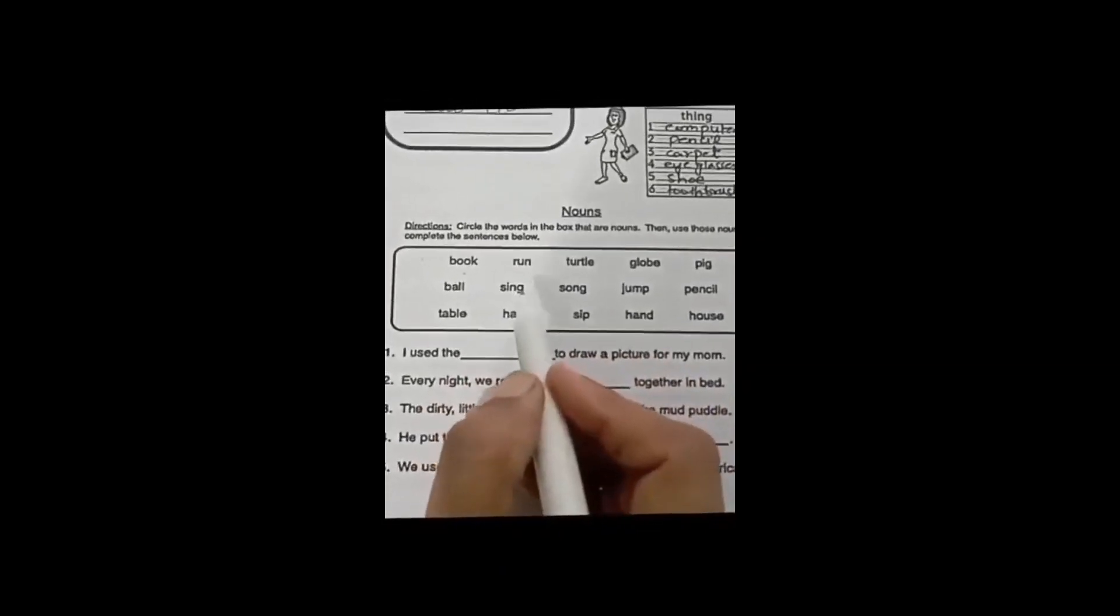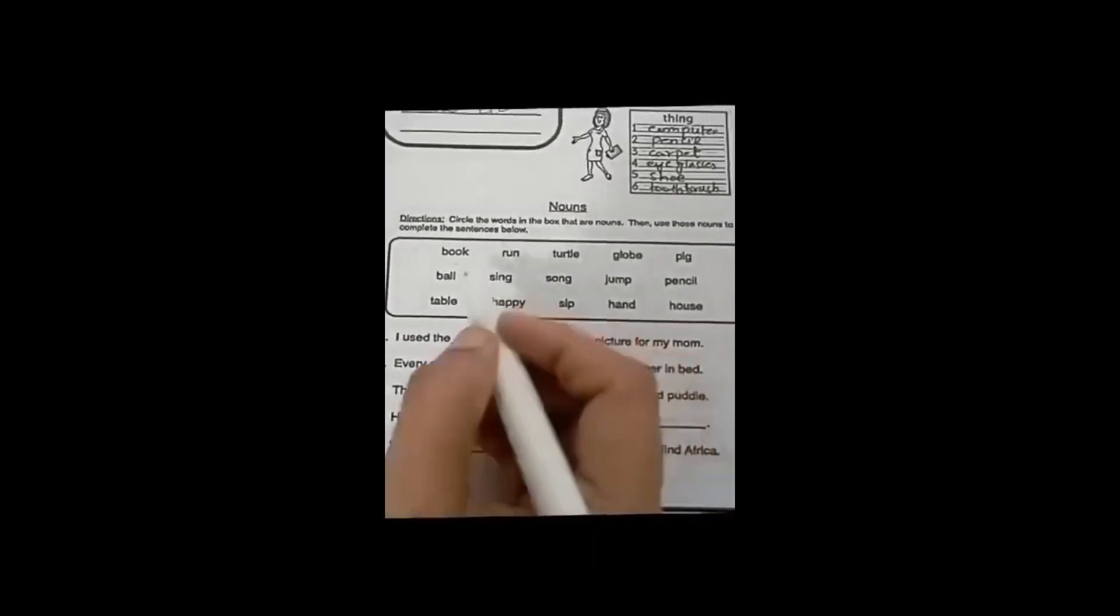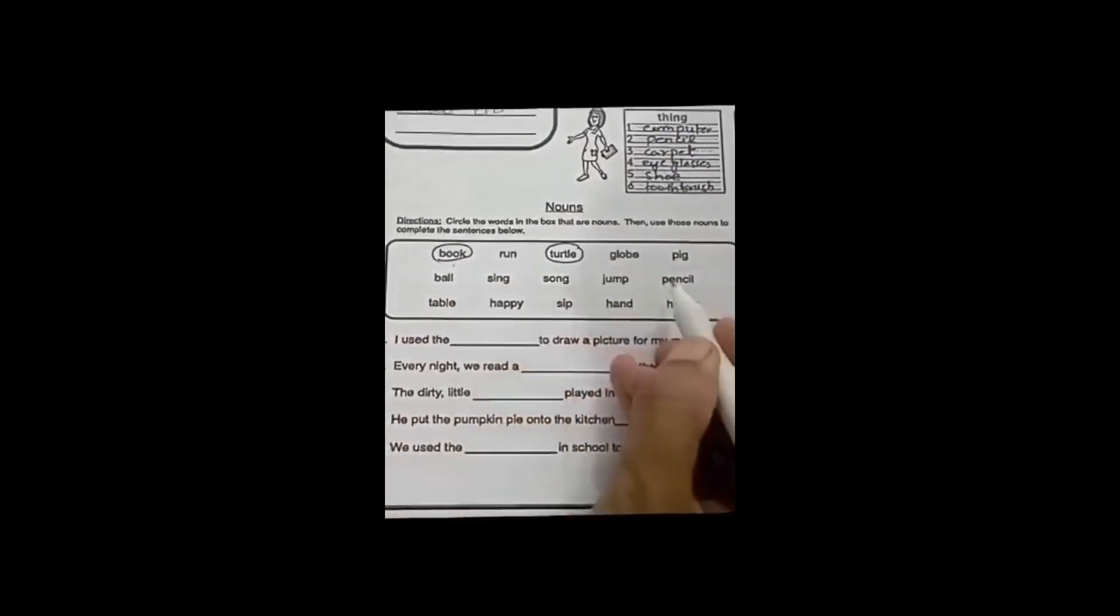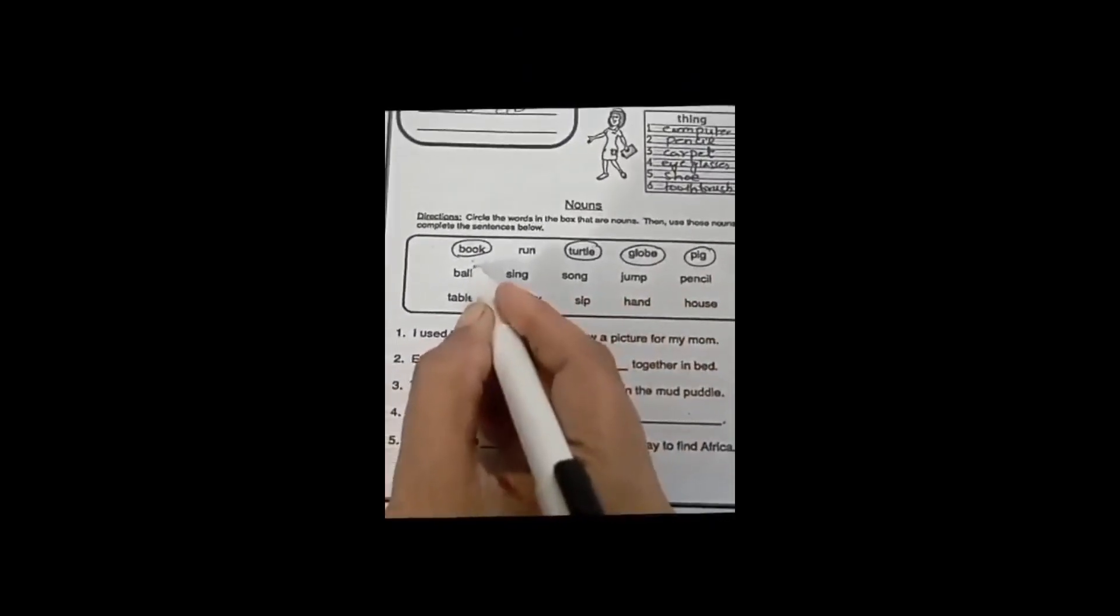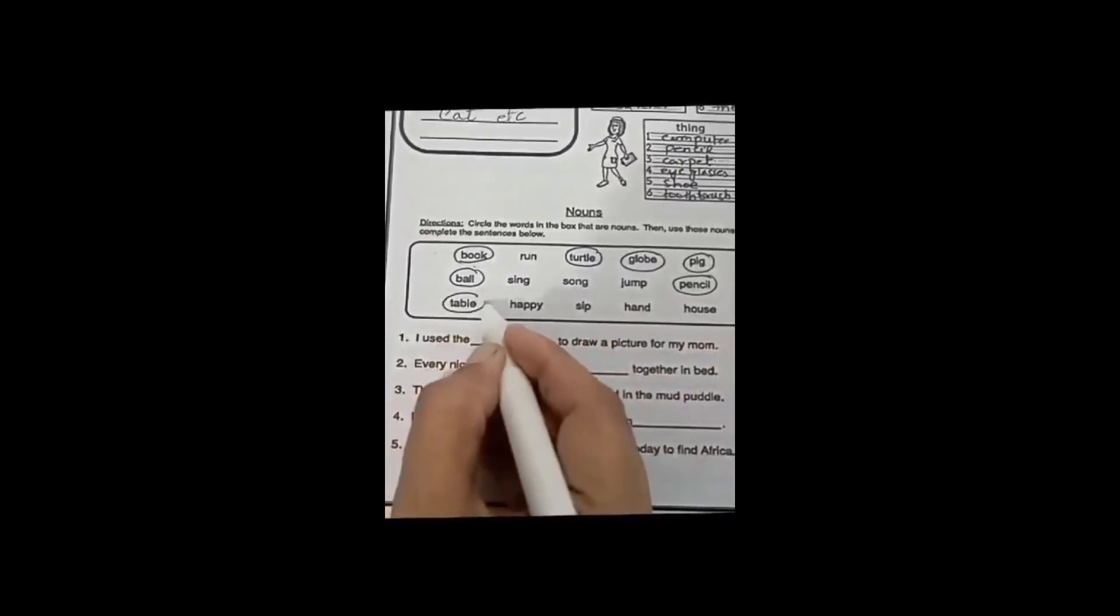Your question number 3. Circle the words in the box that are nouns, then use those nouns to complete the sentence below. Okay students, let's circle the nouns. Bowl, turtle, globe, pig, ball, pencil, table, house.